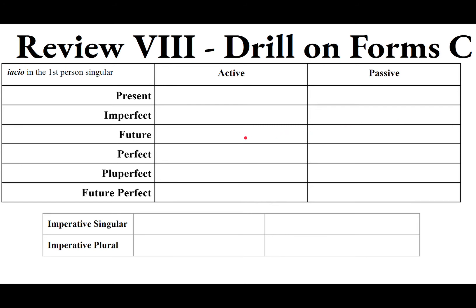For the future, don't use BOBIBITUR. The endings are AM, ES, ET for the active, and AR, ERIS, ETUR for the passive. These are added to the present stem IACI. So: IACIAM — I will throw — and IACIAR — I will be thrown.